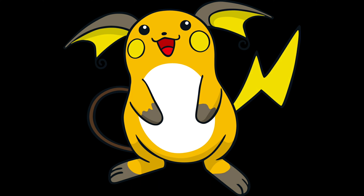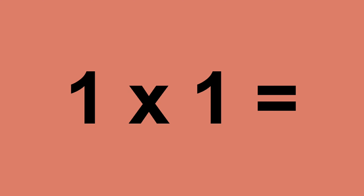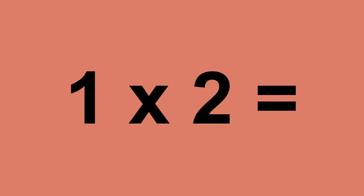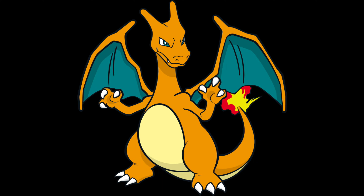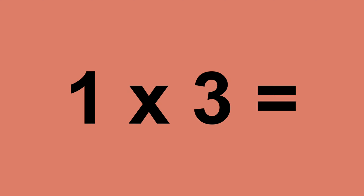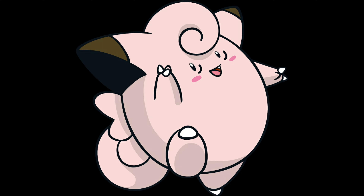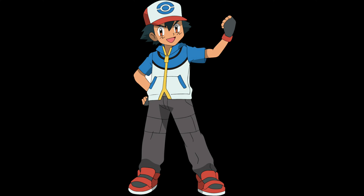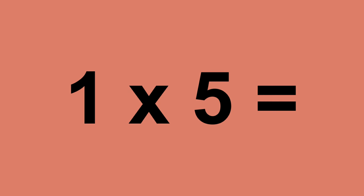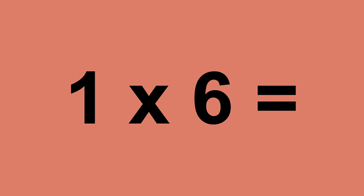One times zero equals zero. One times one equals one. One times two equals two. One times three equals three. One times four equals four. One times five equals five. One times six equals six.